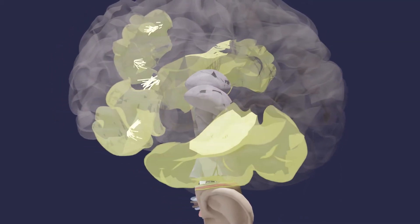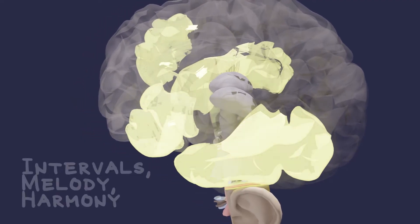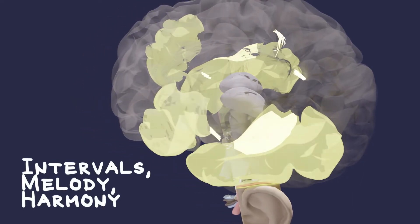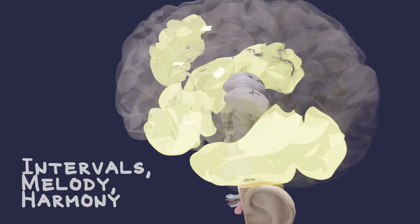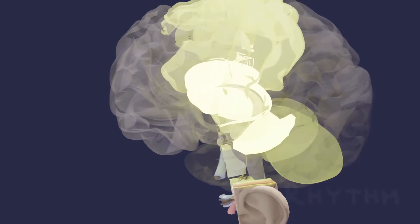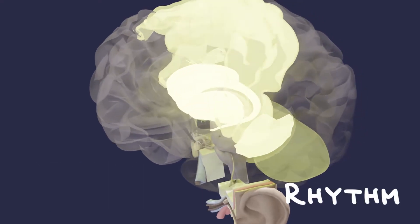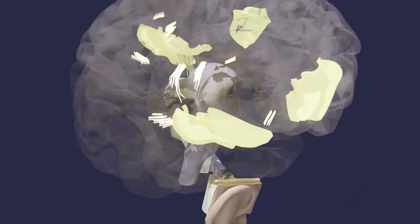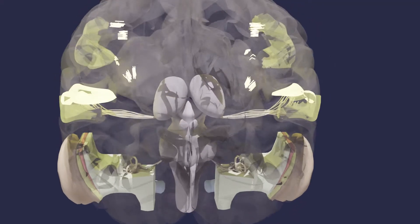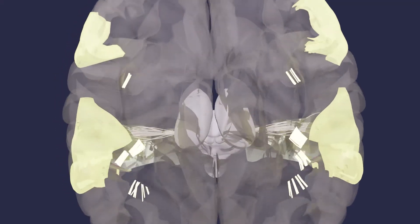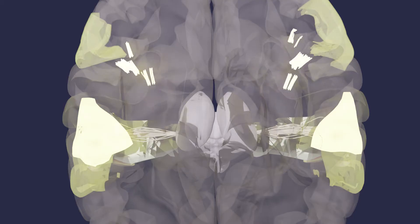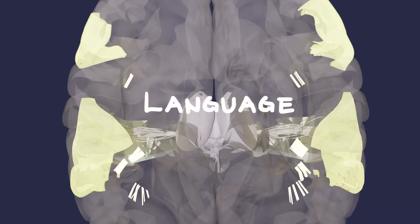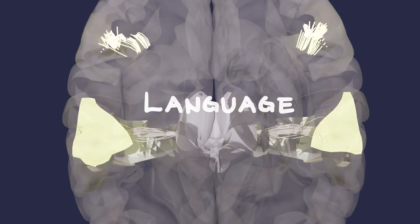Different stops in the network are specialized for processing different elements of music. Processing intervals, melody, and harmony involves superior temporal and inferior frontal regions bilaterally. Rhythm is processed in a network involving motor areas, the basal ganglia, and the cerebellum. Understanding the meaning, syntax, and structure of music involves pathways that overlap with those used in language processing, including frontal and temporal regions and the white matter pathways connecting them.